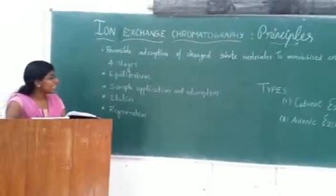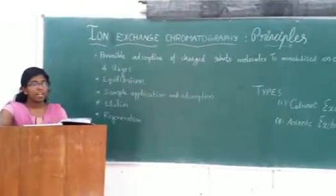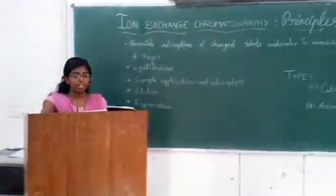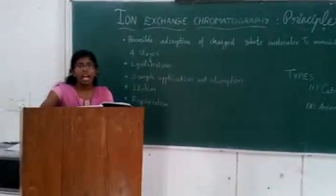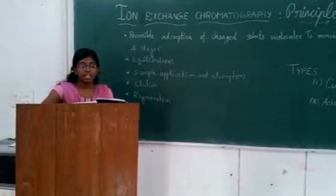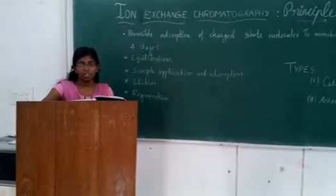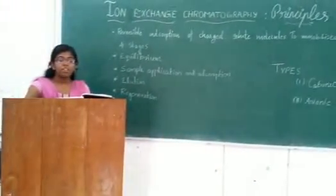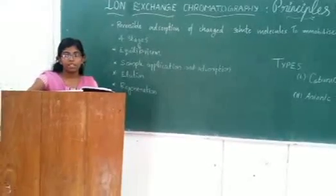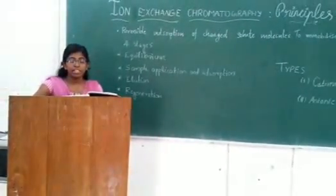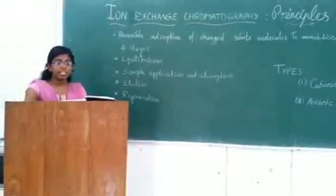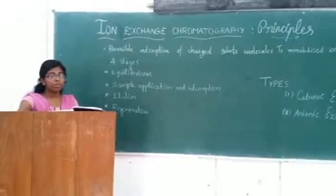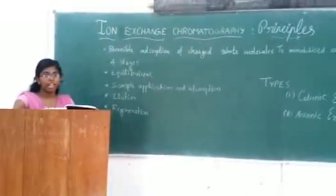And then the fourth stage is the regeneration stage. It involves removal of substances that are not eliminated under the previous experimental conditions and the re-equilibration to the starting conditions for the next purification. Separation is obtained since different substances have different degrees of interactions with the ion exchanger. This is due to the differences in the charges, charge density, and distribution of charge on the surfaces. These interactions can be controlled by varying ionic strength and pH.